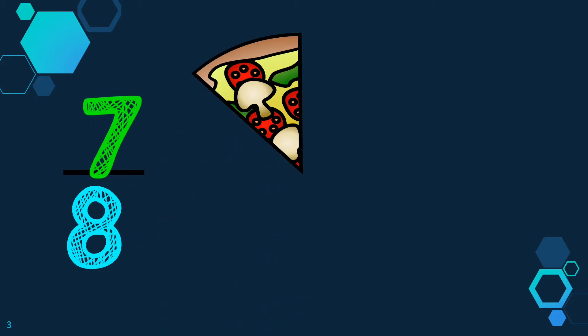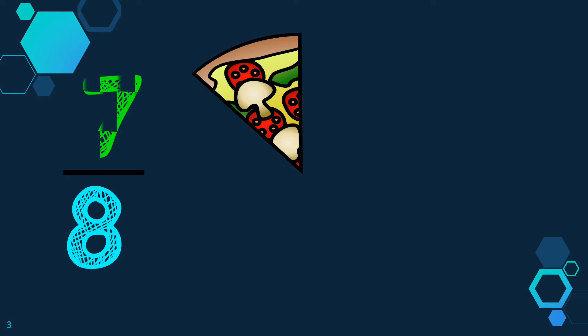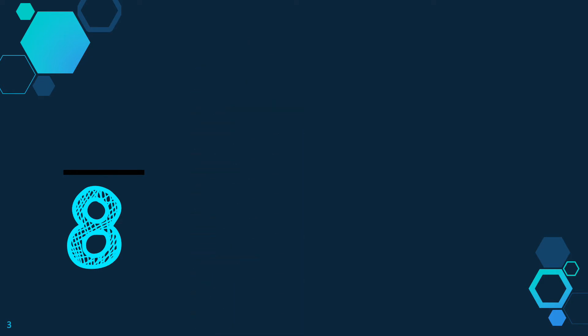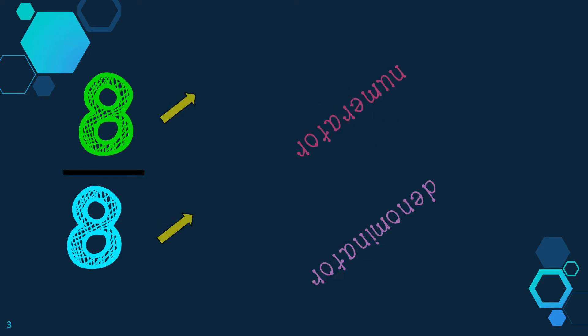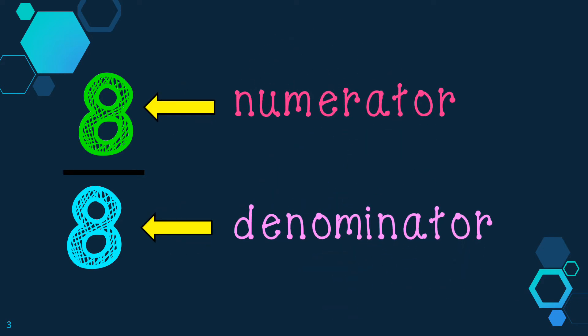Let's say I eat another slice of pizza. Now I have eaten 7 out of 8 slices, or 7 eighths. And if I eat the last slice of pizza, now I have eaten 8 out of 8 slices of pizza, or 8 eighths. I ate the whole pizza — I know I ate the entire pizza because there are no slices left. Notice that the numerator and the denominator are the same. When the numerator and the denominator are the same, it represents one whole.